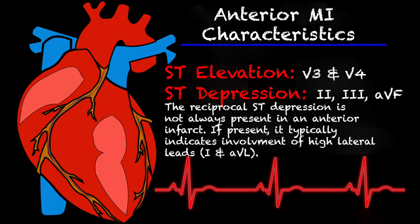ST elevation will be in our anterior leads, which are V3 and V4. I did include ST depression being in leads 2, 3, and AVF, but I want to clarify it. The reciprocal depression is really dependent upon what type of anterior MI you're having. If you're having an acute isolated anterior MI, most likely you won't have any reciprocal depression. But the ST depression in the inferior leads is mainly when there is high lateral involvement — so if we have ST elevation in leads 1 and AVL, then most likely we can expect to see reciprocal depression in 2, 3, and AVF.